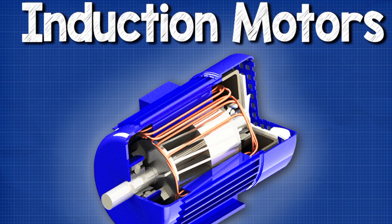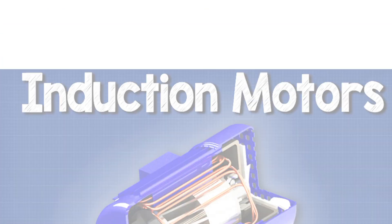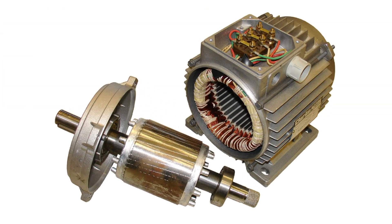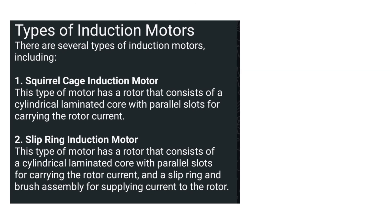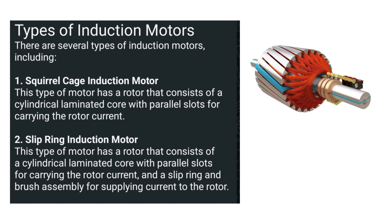There are mainly two types of induction motors. The first one is the squirrel cage induction motor, which is very important. This type of motor has a rotor consisting of a cylindrical laminated core with parallel slots for carrying the rotor current.